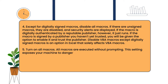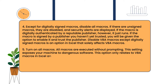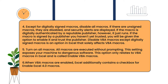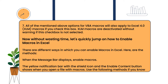Fourth, turn on all macros. All macros are executed without prompting. This setting exposes your machine to dangerous software. This option only relates to VBA macros in Excel and is called 'Enable VBA macros.' When VBA macros are enabled, Excel additionally contains a checkbox for 'Enable Excel 4.0 macros.' All of the above-mentioned options for VBA macros will also apply to Excel 4.0 macros if we check this box.